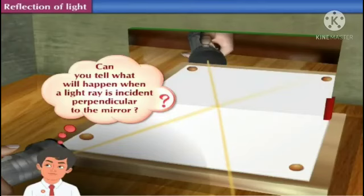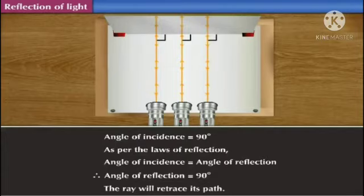Can you tell what will happen when a light ray is incident perpendicular to the mirror? Yes. When a light ray is incident perpendicular to the mirror, it traces the same path as the incident ray.